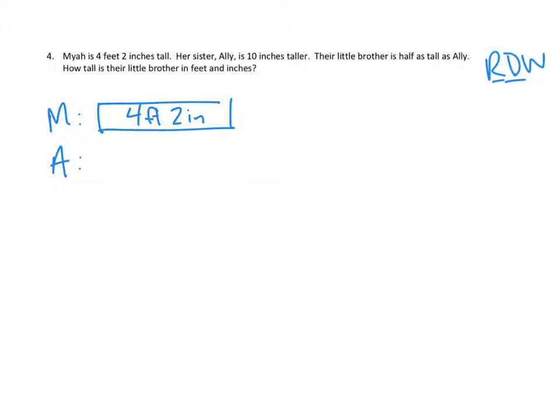Allie is taller. So Allie's that amount plus ten inches, right? So that's four feet two inches plus the ten inches. That would be Allie's feet. Let's see if we got that right. Her sister Allie is ten inches taller, so more, right? Okay.